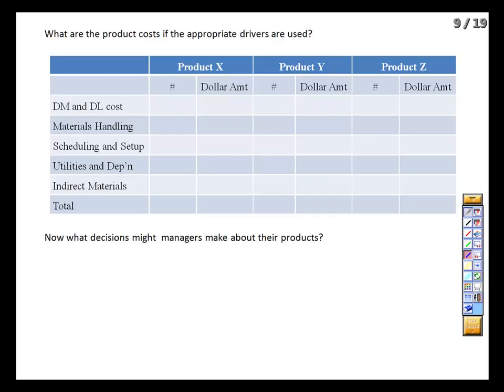Looking at Product X, we of course start with our $180,000 of direct material and direct labor — that hasn't changed; all that's changed is the way we're applying overhead. Product X requires 600,000 pounds of materials, and at $0.70 per pound, we're going to be applying $420,000 of cost. It requires 20 setups, and at $2,400 per setup, that means $48,000 of overhead.